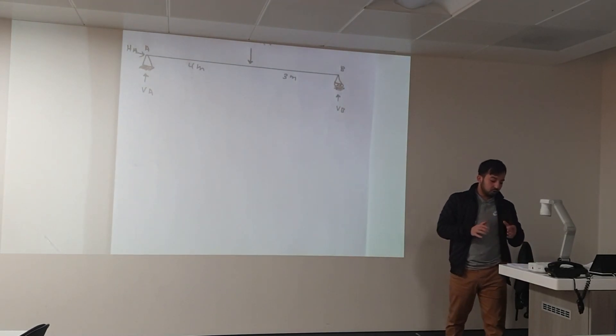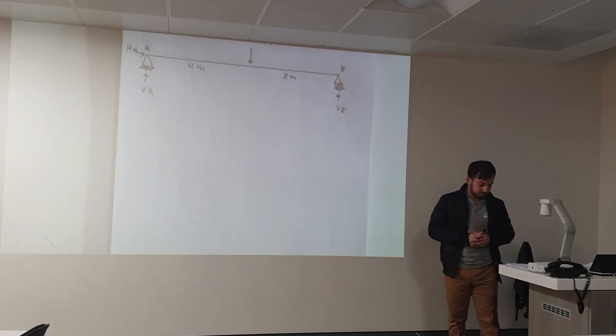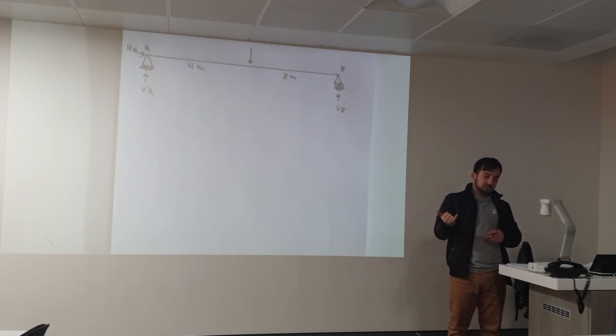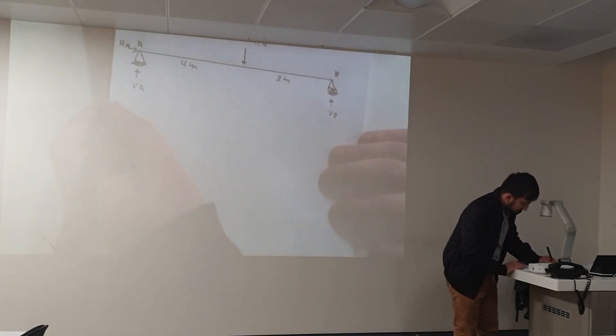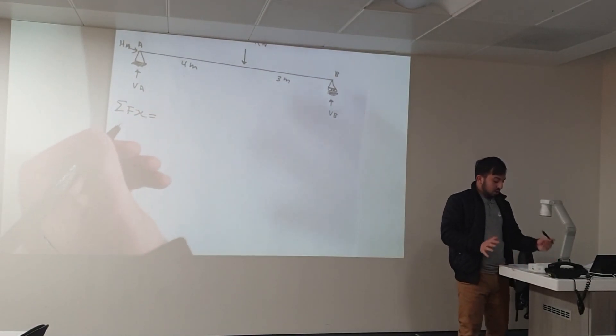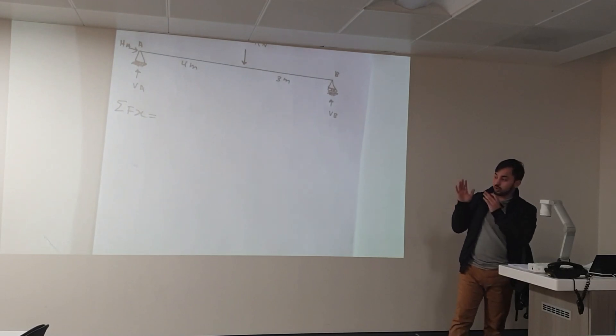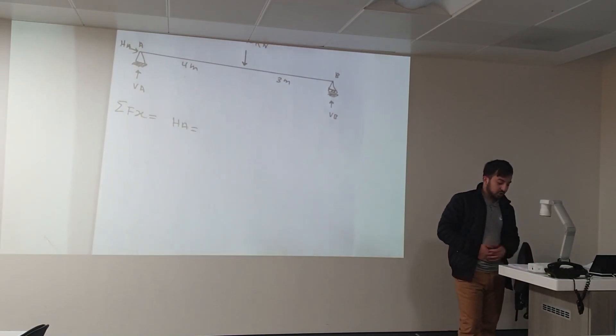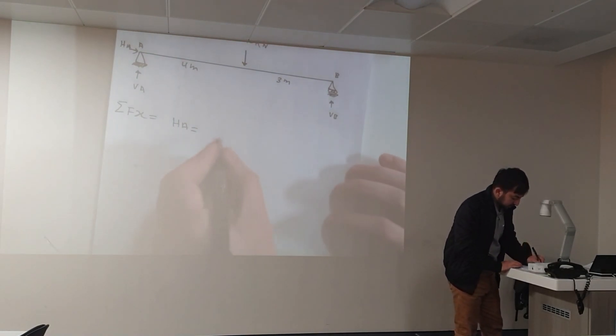So how to calculate the reactions of this beam? Always start from horizontal axis, vertical axis, and then take a moment. First we take sum of Fx. Fx means all the forces acting toward x-axis. So we have only HA, but we don't have any force acting horizontally. Therefore, our HA is equal to zero.